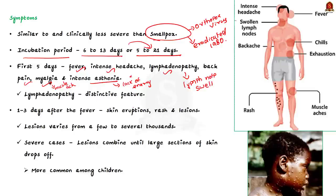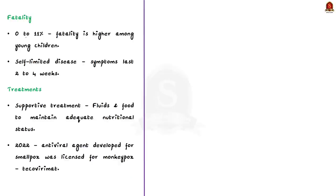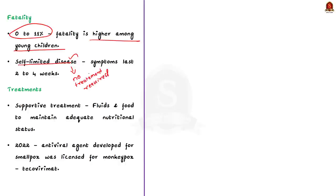In severe cases, skin lesions can combine until large sections of skin drop off, and such cases occur more commonly among children. The fatality ratio for monkeypox is 0 to 11%, with fatality being higher among young children. However, monkeypox is a self-limited disease, meaning the infection resolves spontaneously with or without specific treatment. Symptoms typically last only 2 to 4 weeks.